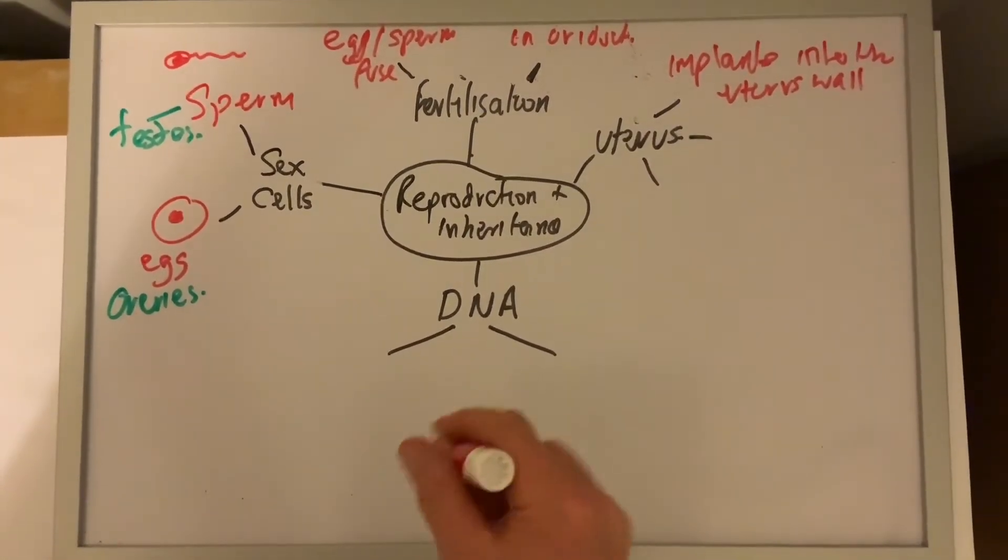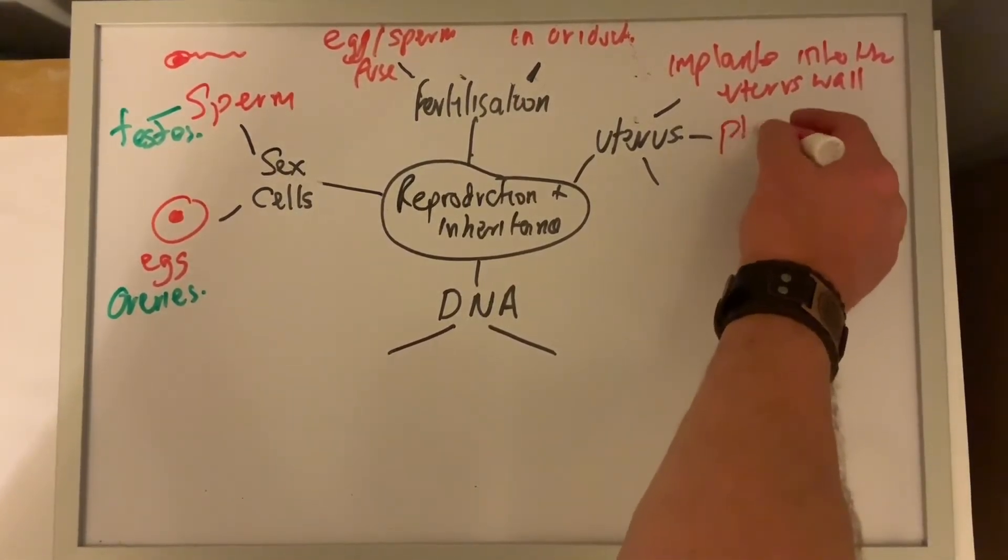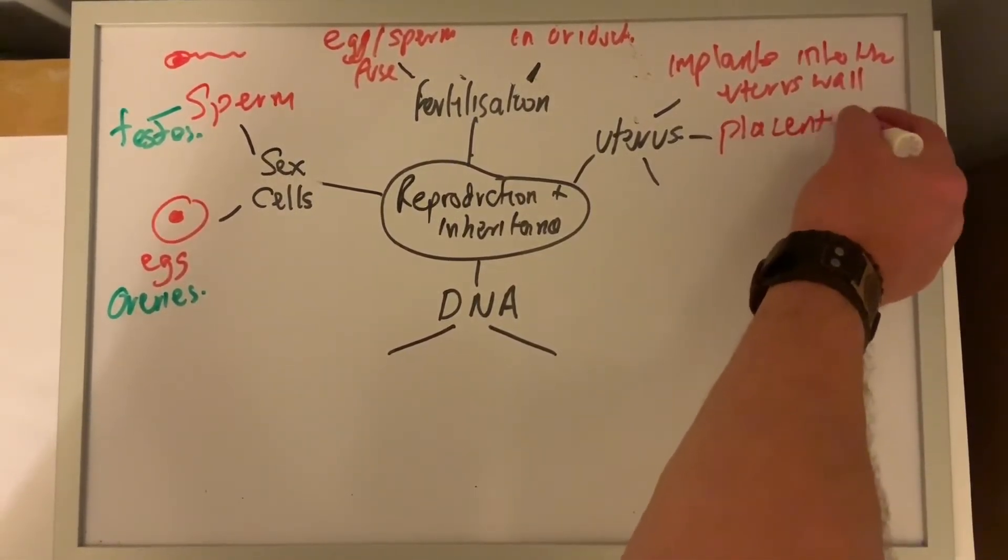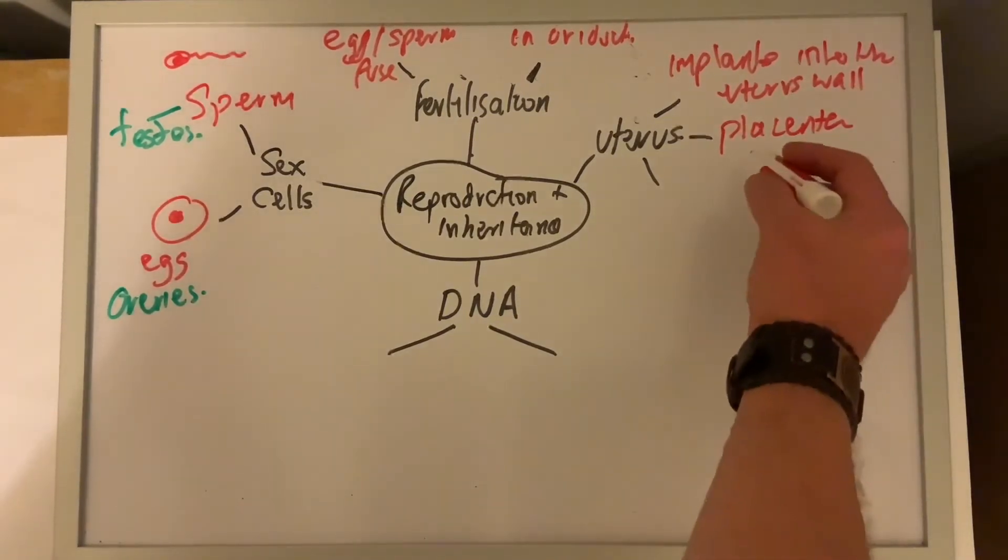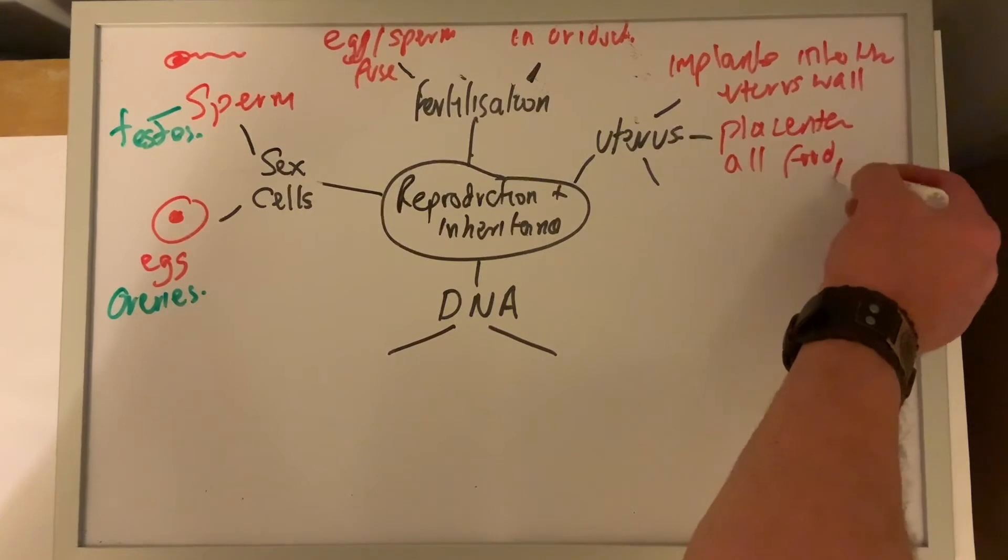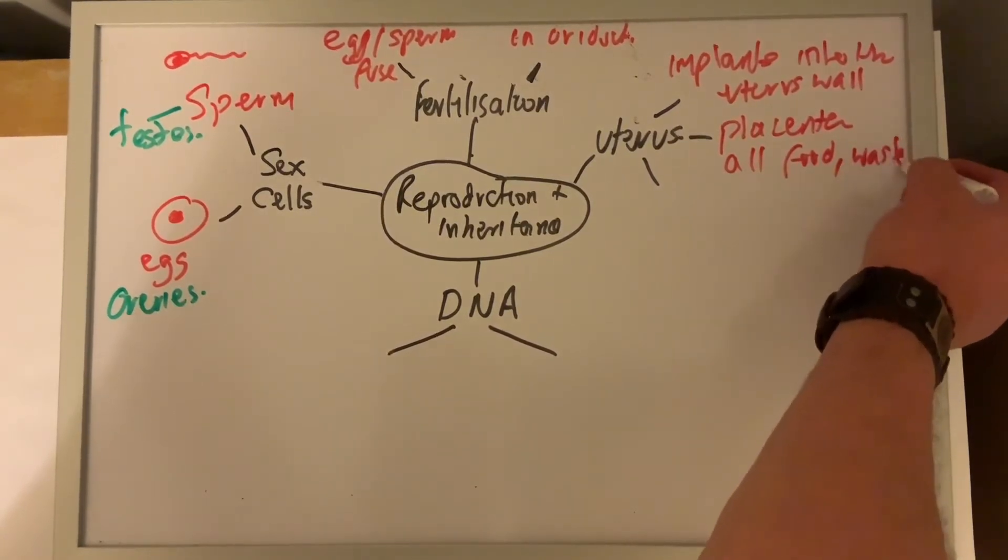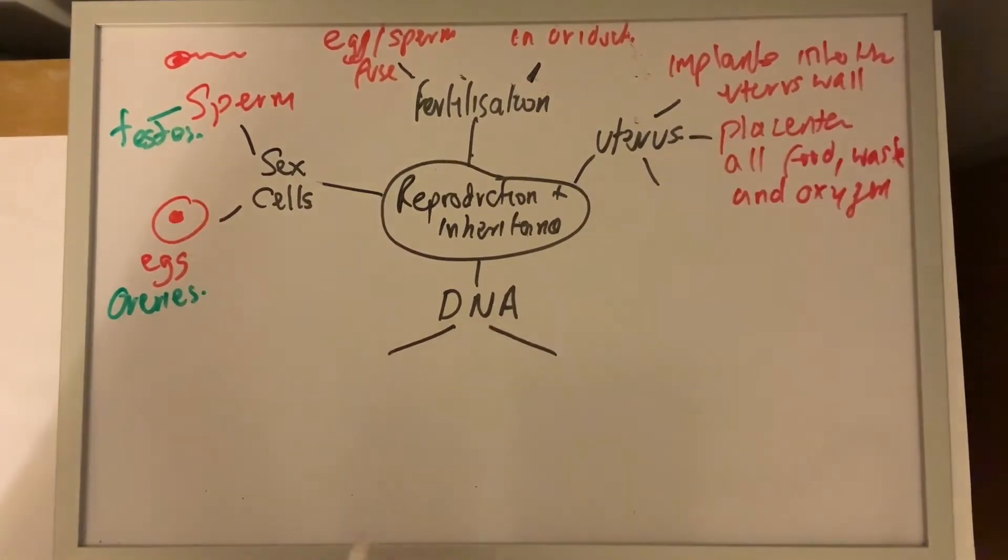The uterus lining, which has now become what's called the placenta. This is where the mum's blood and the baby's blood, they never meet, but they do allow food, waste and oxygen to be passed between the two. But the bloods never meet. If they meet, then it would be probably terminal for the baby.